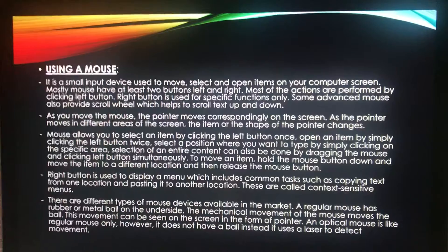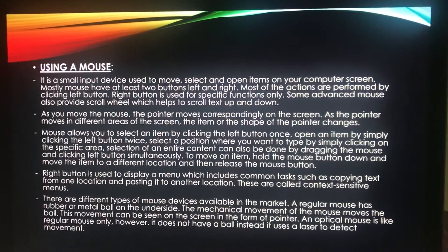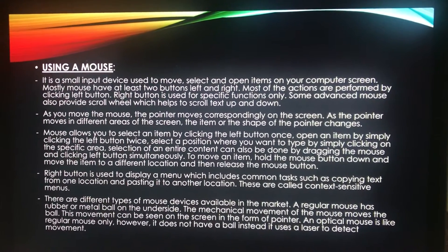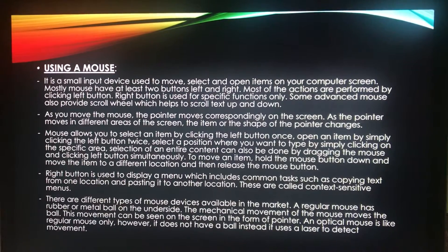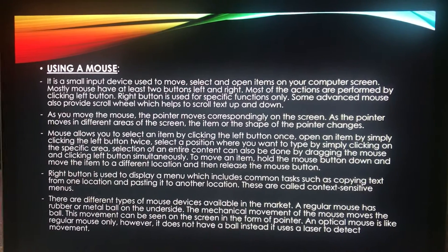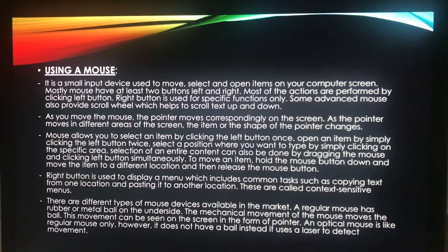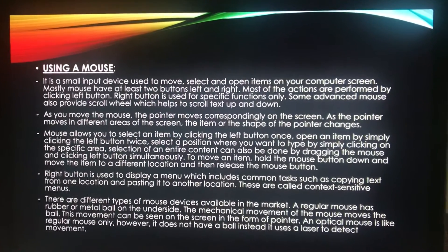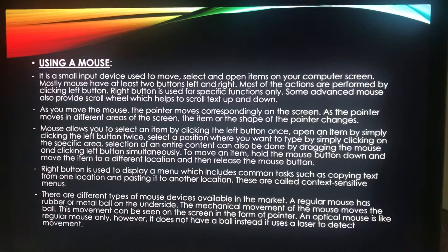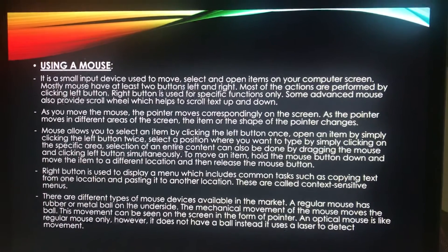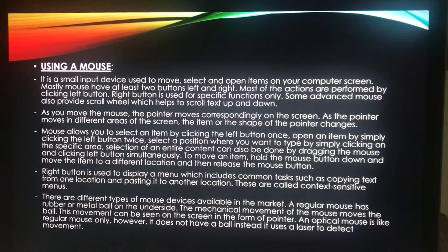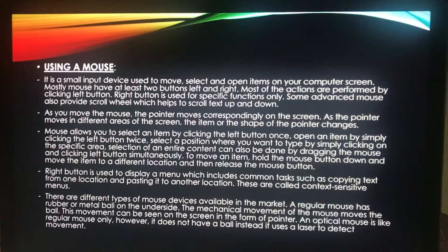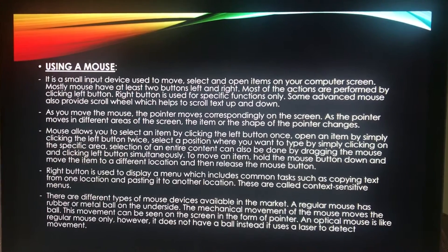The right button on the mouse is used to display a menu. The options on this menu include the most common tasks such as copying text from one location and pasting it to another. These are called context-sensitive menus, and they help you complete tasks quickly. Most mouse devices also have a wheel that helps you scroll through documents or pages. Place your finger on the wheel and roll it back and forth to move the document up and down.